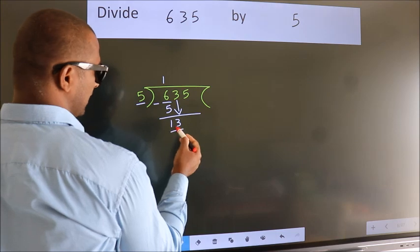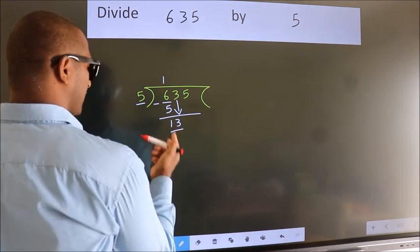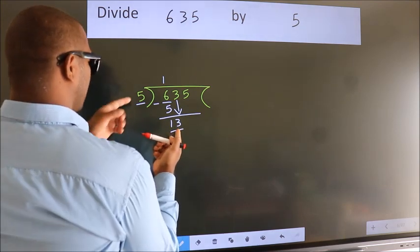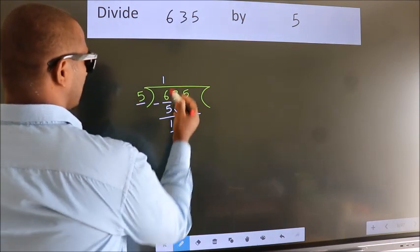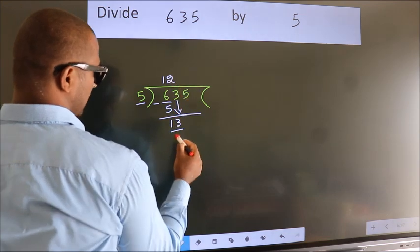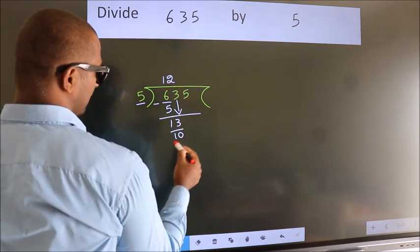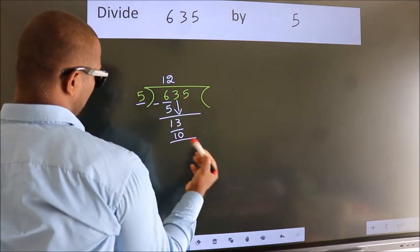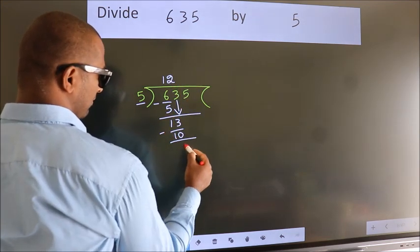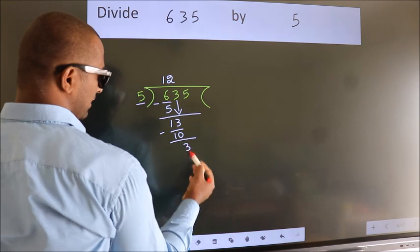So, 13. A number close to 13 in the 5 table is 5 twos, which is 10. Now we subtract — we get 3.